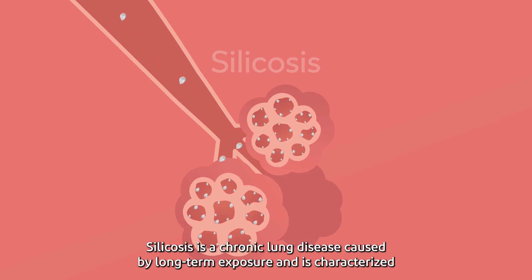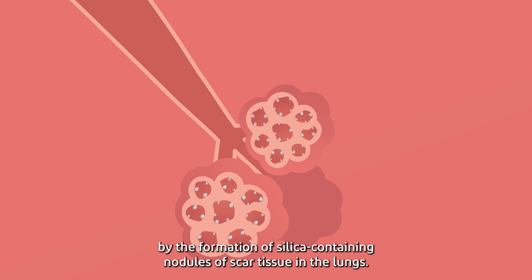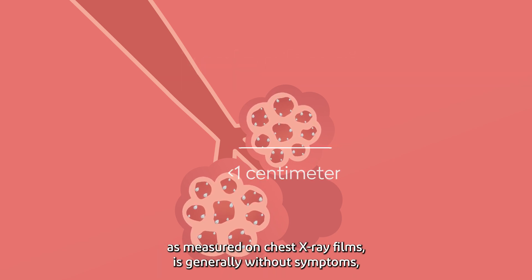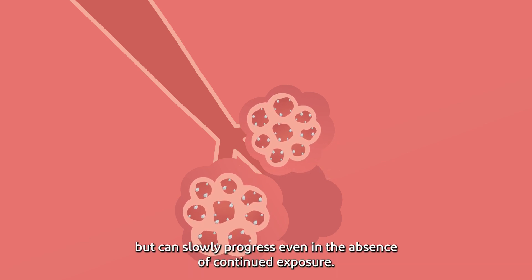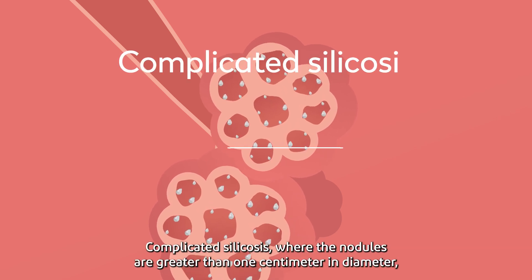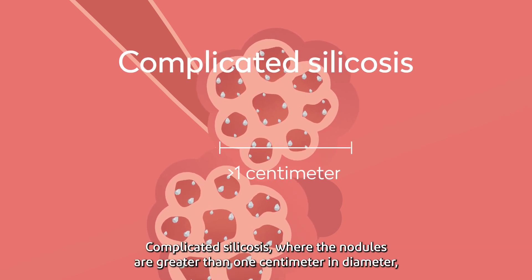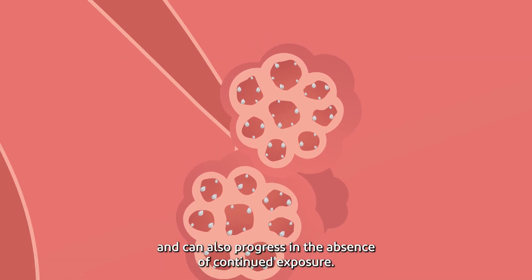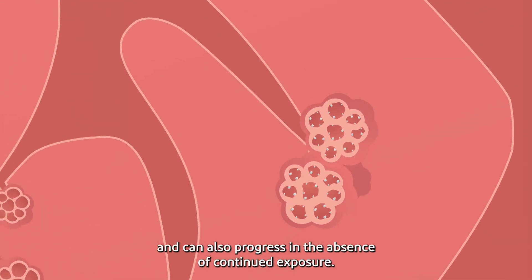Silicosis is a chronic lung disease caused by long-term exposure and is characterized by the formation of silica-containing nodules of scar tissue in the lungs. Simple silicosis, in which the nodules are less than 1 cm in diameter as measured on chest x-ray films, is generally without symptoms but can slowly progress even in the absence of continued exposure. Complicated silicosis, where the nodules are greater than 1 cm in diameter, is more often associated with disability and can also progress in the absence of continued exposure.